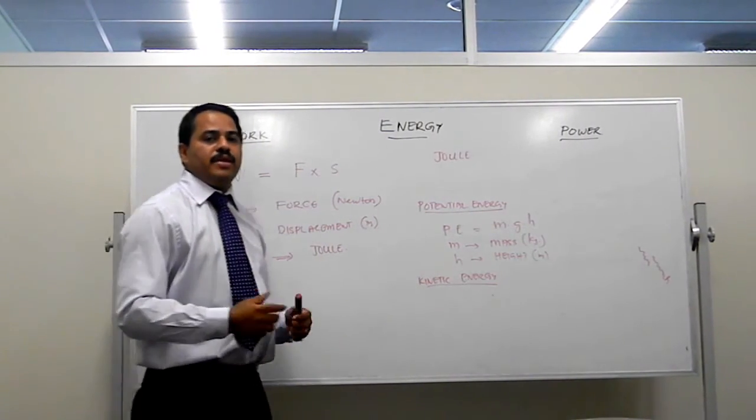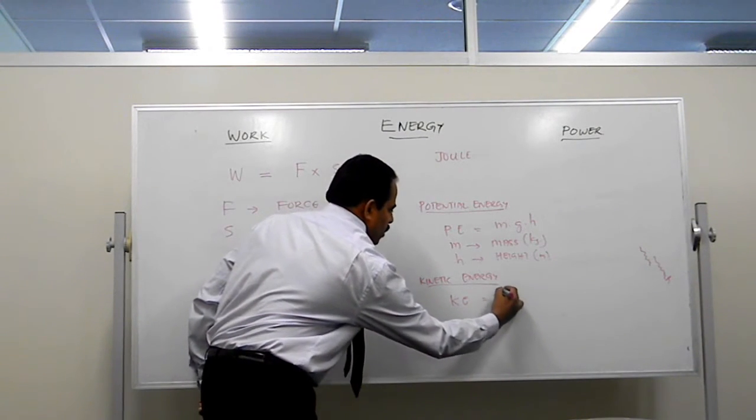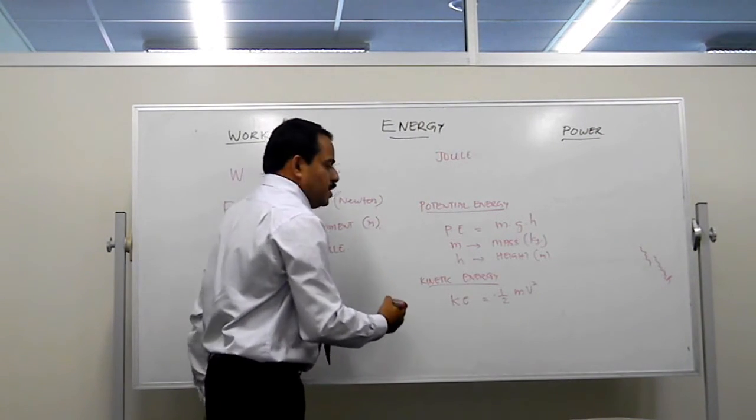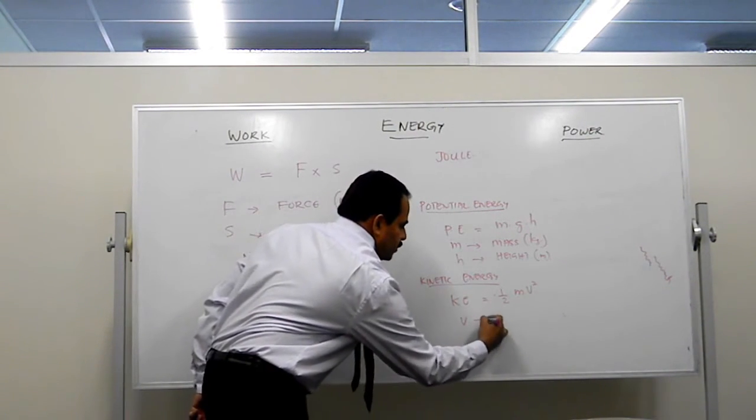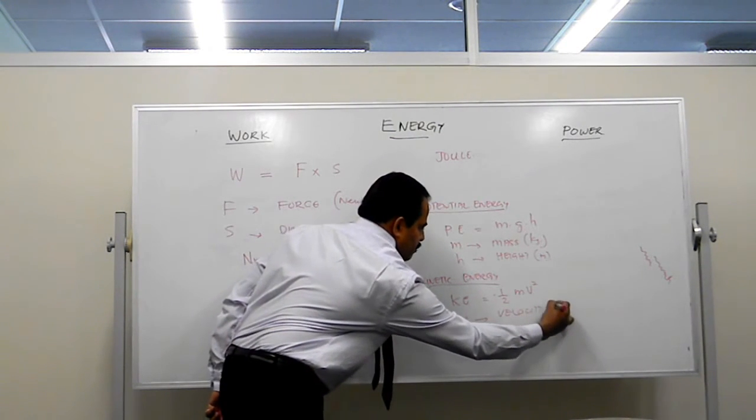The expression for kinetic energy is KE equals half m v squared, where m is the mass in kilogram and v is velocity in meter per second.